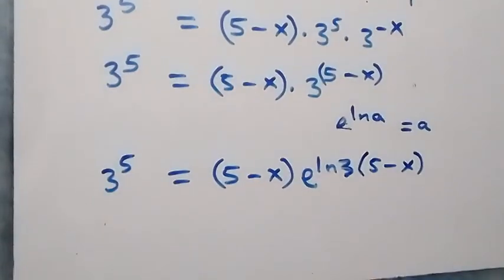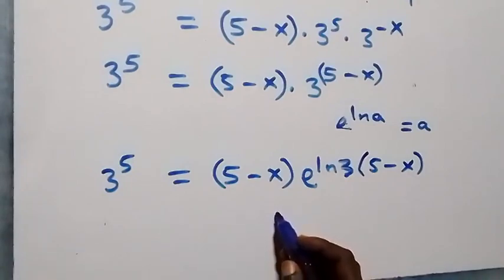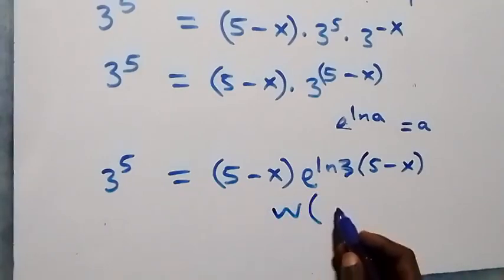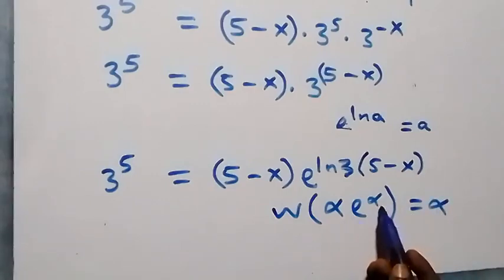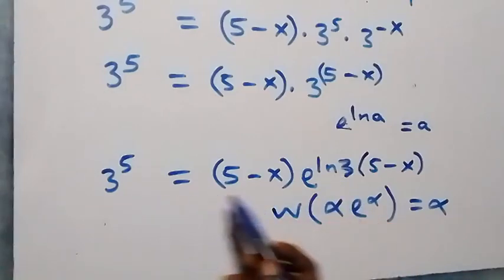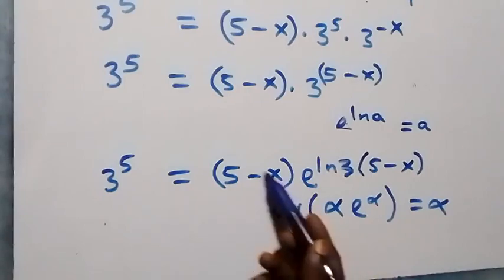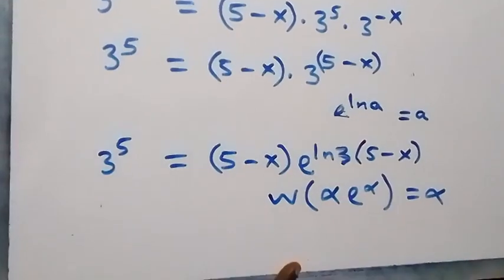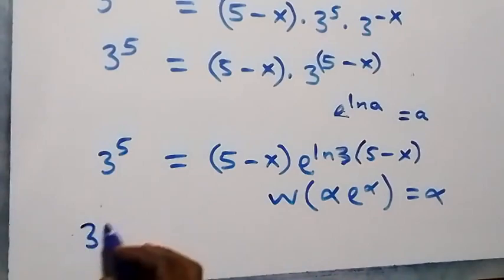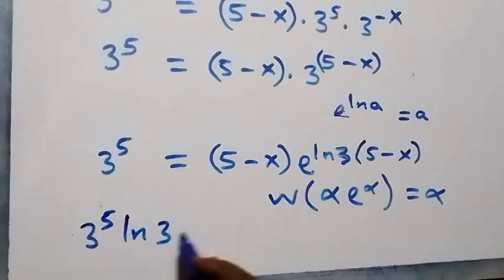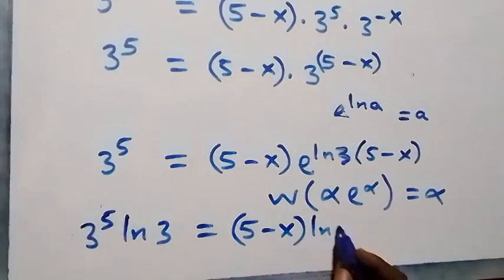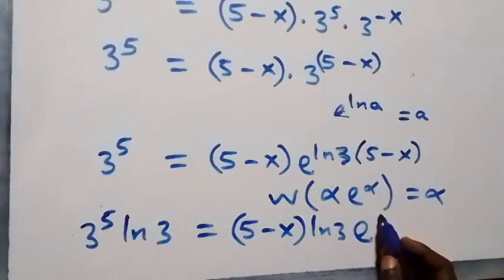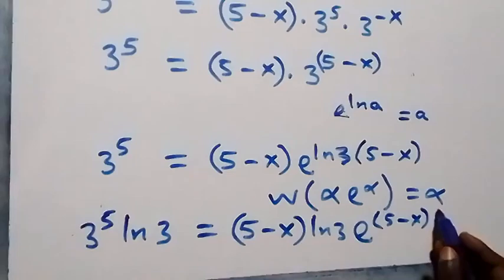Since we want to use the Lambert W function — which states W of alpha times exponent alpha equals alpha, meaning the power of the exponent and the coefficient must be equal — we need to multiply both sides by ln three so as to make the coefficient equal to the power. Then we now have three raised to power five times ln three equals five minus x times ln three, times exponent of five minus x times ln three.